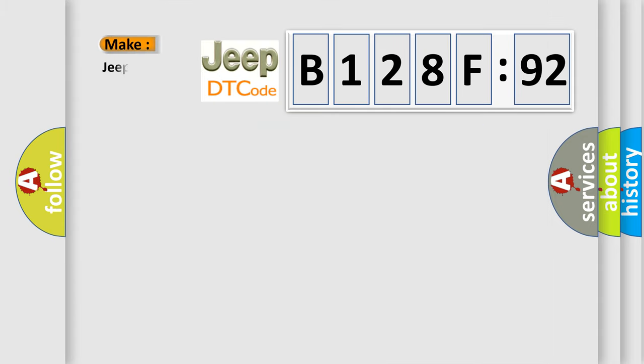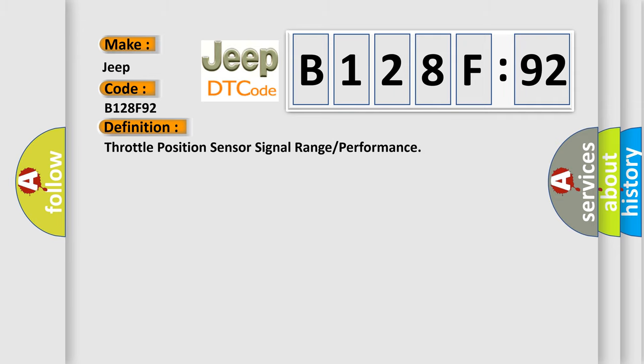So, what does the diagnostic trouble code B128F92 interpret specifically for Jeep car manufacturers? The basic definition is Throttle position sensor signal range or performance.